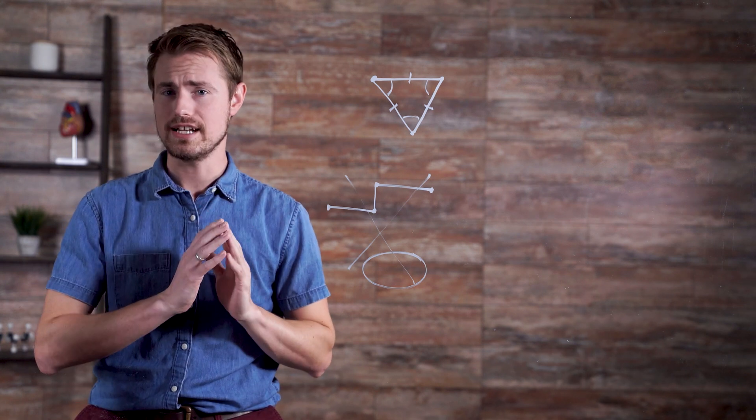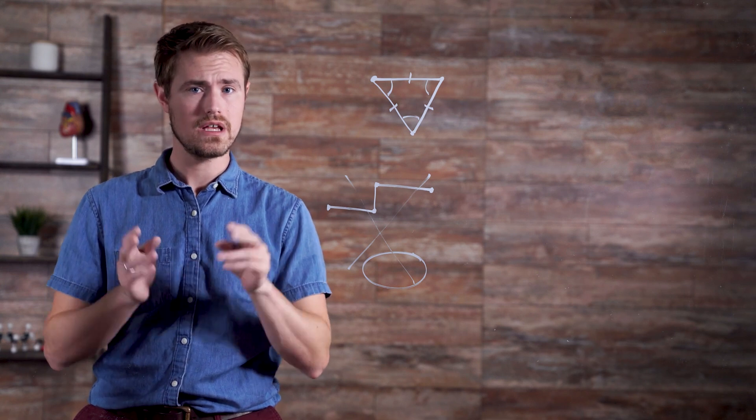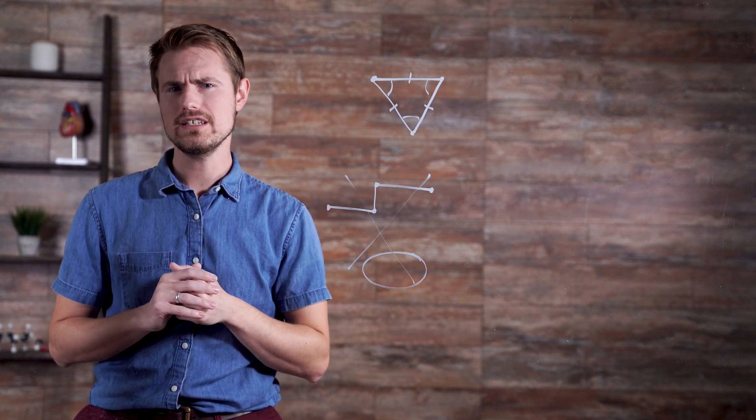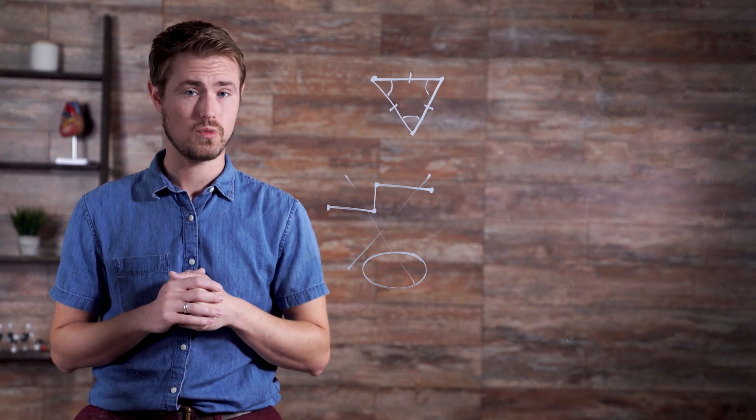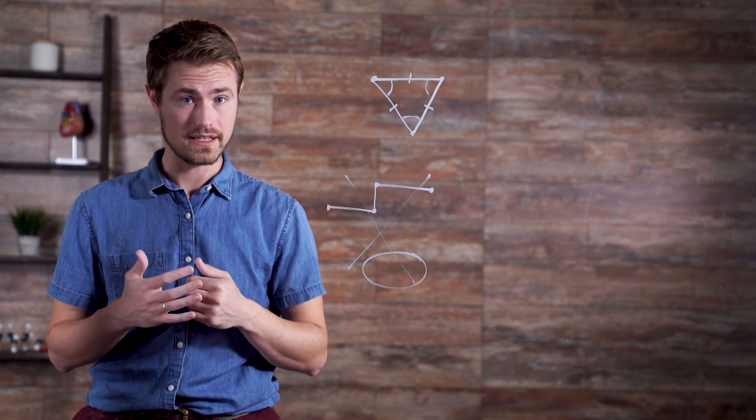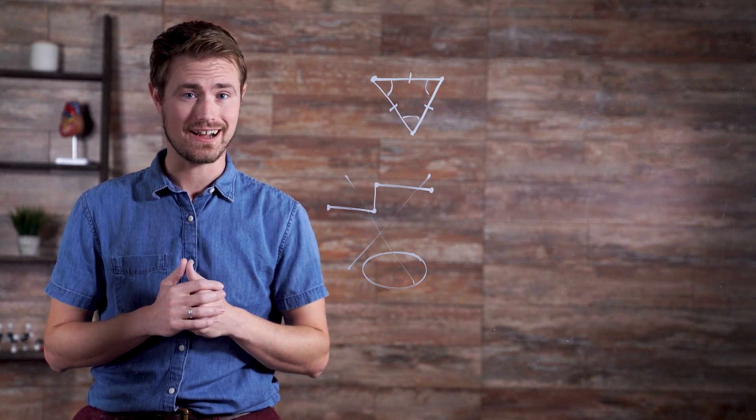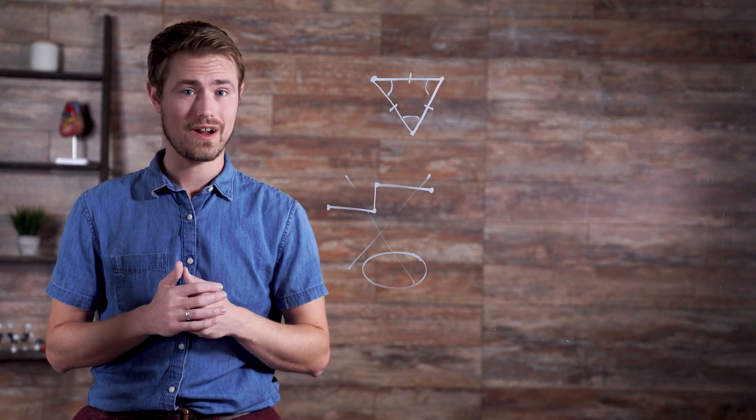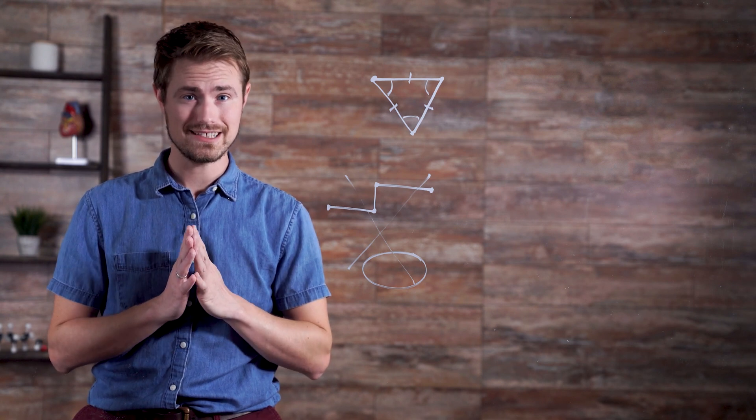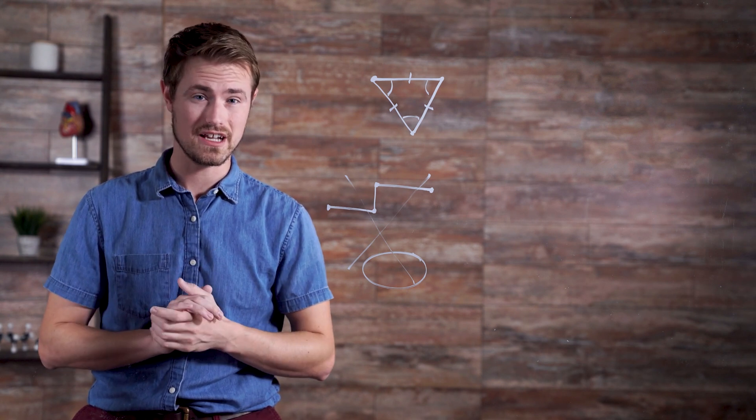Though polygons with any number of edges have names, the general N-gon is typically used for all other polygons, where N represents the number of sides. For instance, a 30-sided polygon is called a tricontagon, but it's often simply called a 30-gon.